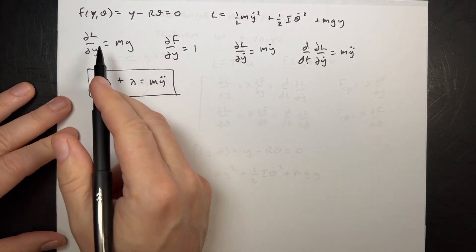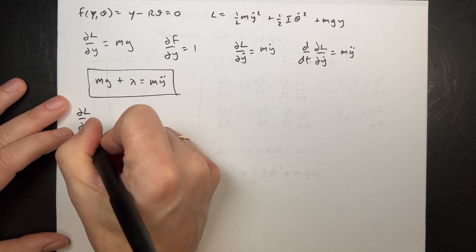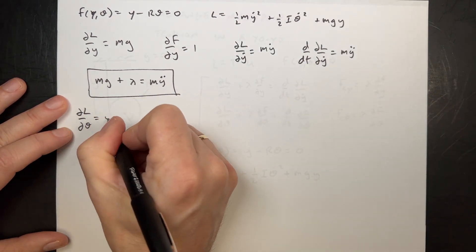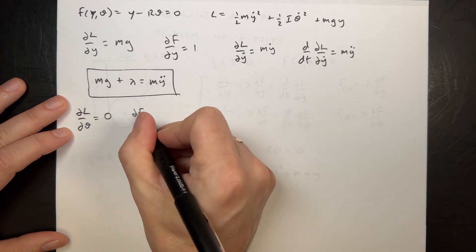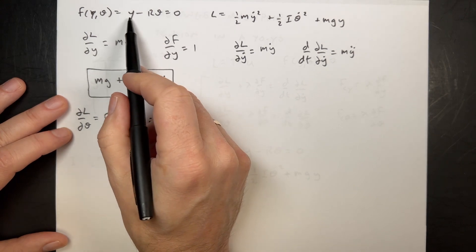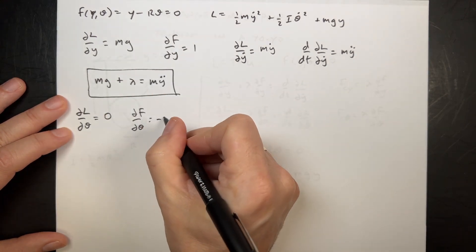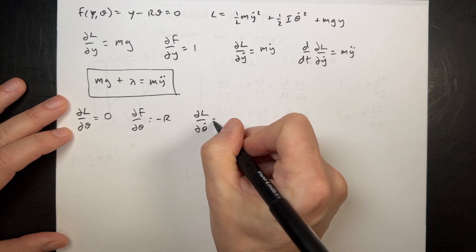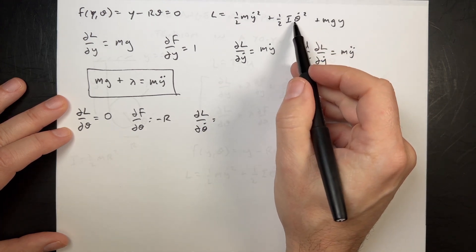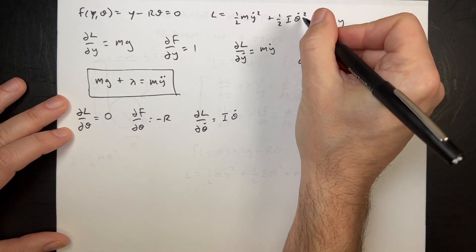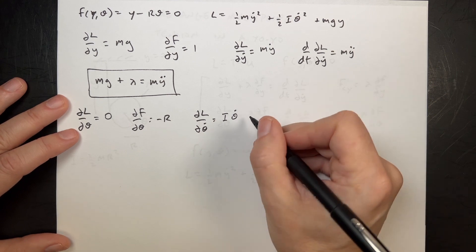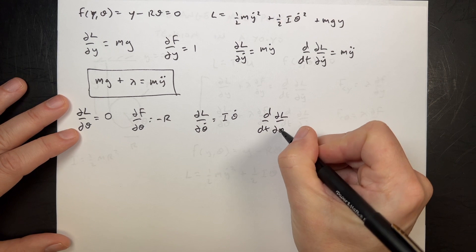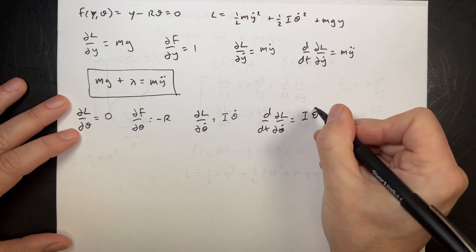For theta: the partial of L with respect to theta is zero — there's no theta in L. The partial of F with respect to theta is negative R. The partial of L with respect to theta-dot is I·theta-dot, and its time derivative is I·theta-double-dot.